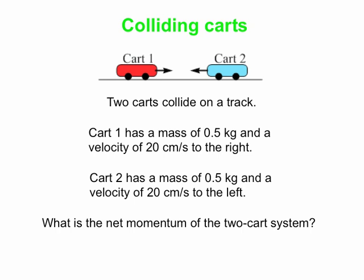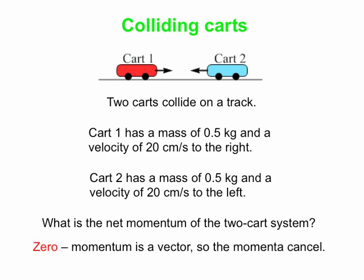What is the net momentum of the two-cart system? To find the net momentum, you can add the momentum of cart 1 to the momentum of cart 2. However, you always have to remember that momentum is a vector. In this case, the net momentum of the two-cart system is zero, because you've got cart 1 with a momentum directed to the right. Cart 2 has an equal and opposite momentum directed to the left. So when you combine them, they combine to be zero.